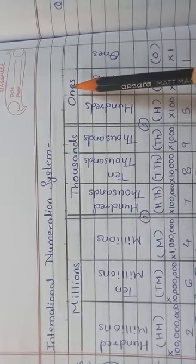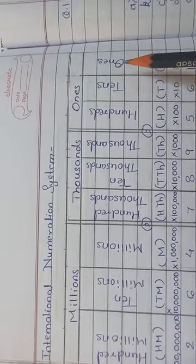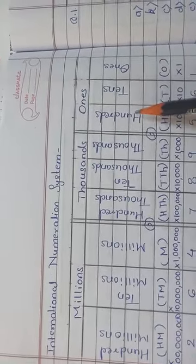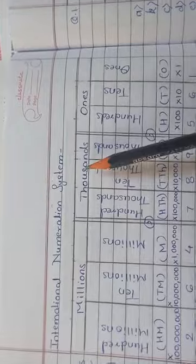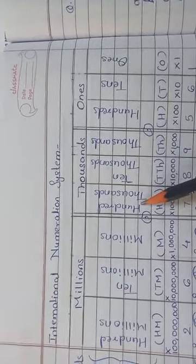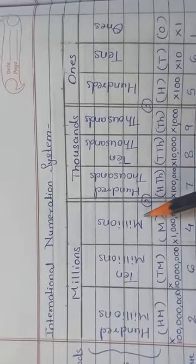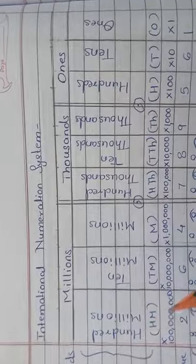The ones period is divided into ones, tens, and hundreds. The thousands period is divided into thousands, ten thousands, and hundred thousands. The millions period is divided into millions, ten millions, and hundred millions.